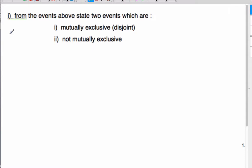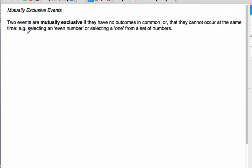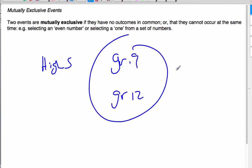From the events above, so all our cards, state two events which are mutually exclusive or disjoint. Well, in order to answer this question, you need to know what these two words mean. Mutually exclusive means two events are mutually exclusive if they have no outcomes in common. Or, they cannot occur at the same time. So, selecting an even number or selecting a one from a set of numbers is mutually exclusive. Or, if I consider a high school, right, if I want to select someone who is in grade 9 and someone who is in grade 12, this is mutually exclusive because I cannot do it at the same time. There's no overlap region.